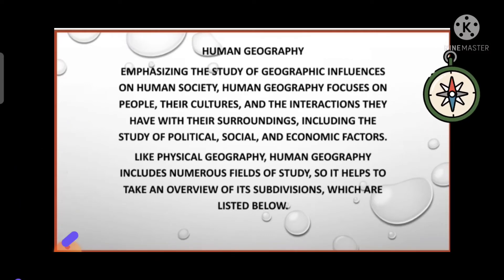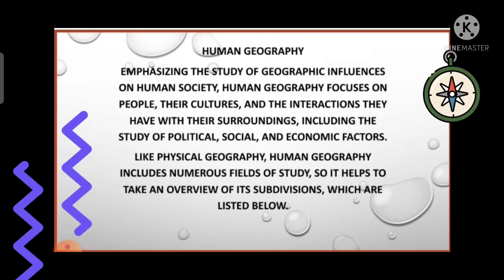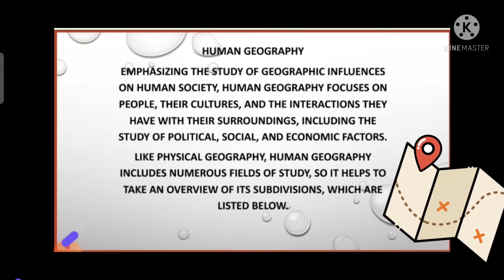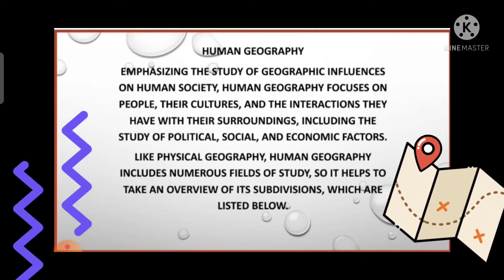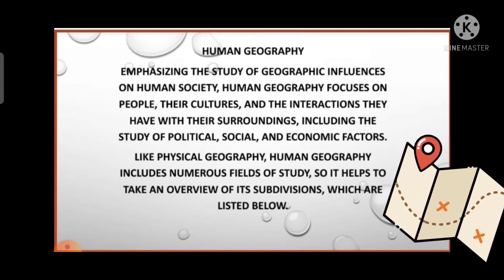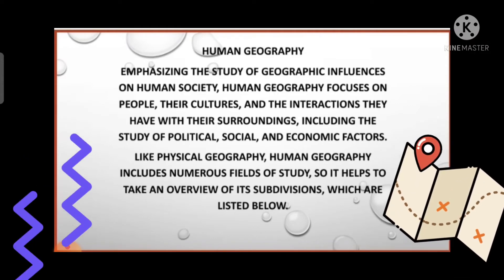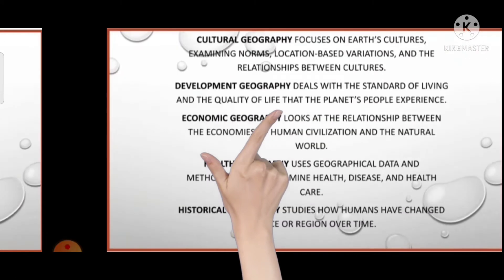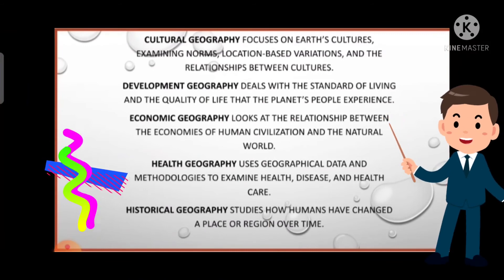Our next point is historical geography. In historical geography, the process through which space gets organized is studied — every region has undergone some historical experiences before attaining its present-day status. Geographical features also experience temporal change, and these form the concerns of historical geography. We can understand the present status of any particular region through this lens.